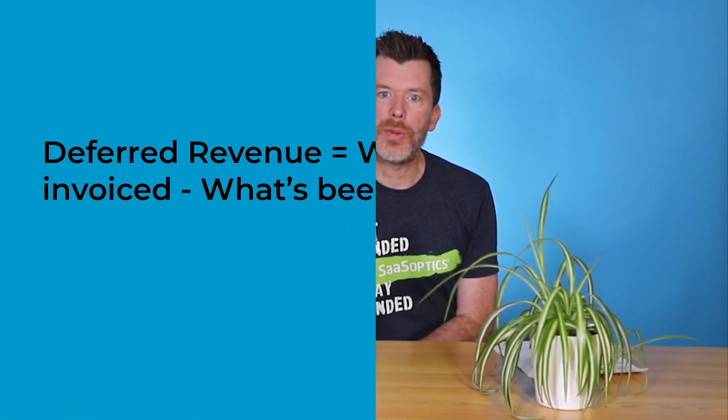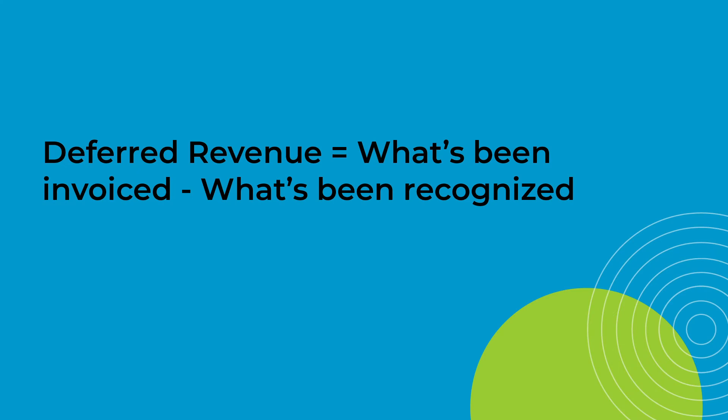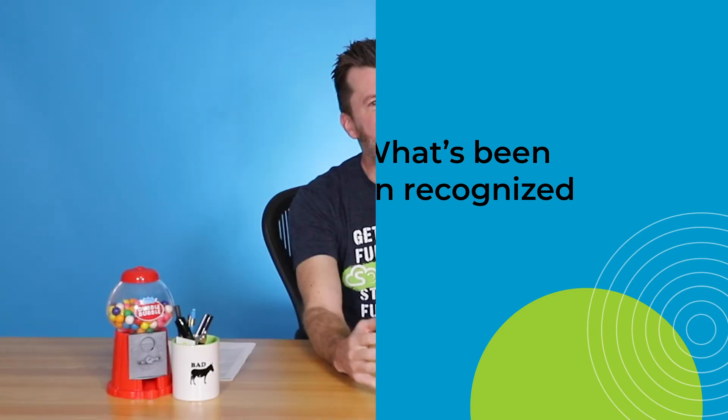An easy rule of thumb to help you remember deferred revenue is: what's been invoiced minus what's been recognized. Now it is accounting, so there are exceptions, gray areas, and landmines, but that rule should keep you straight in most situations.